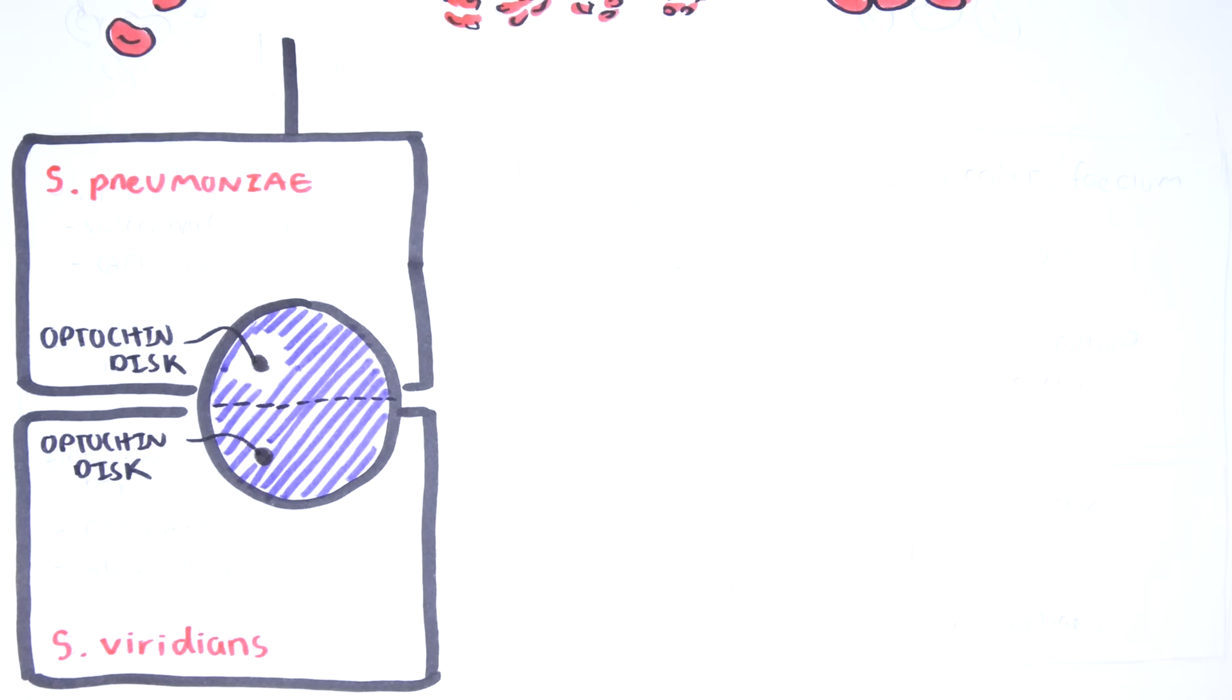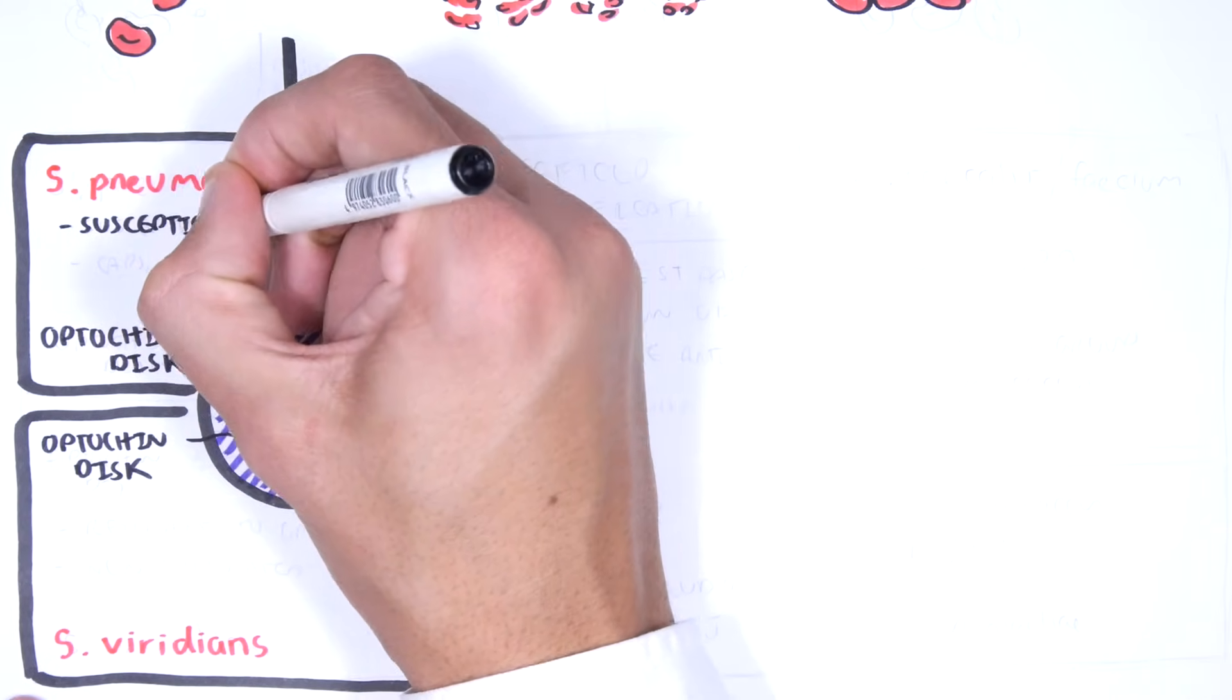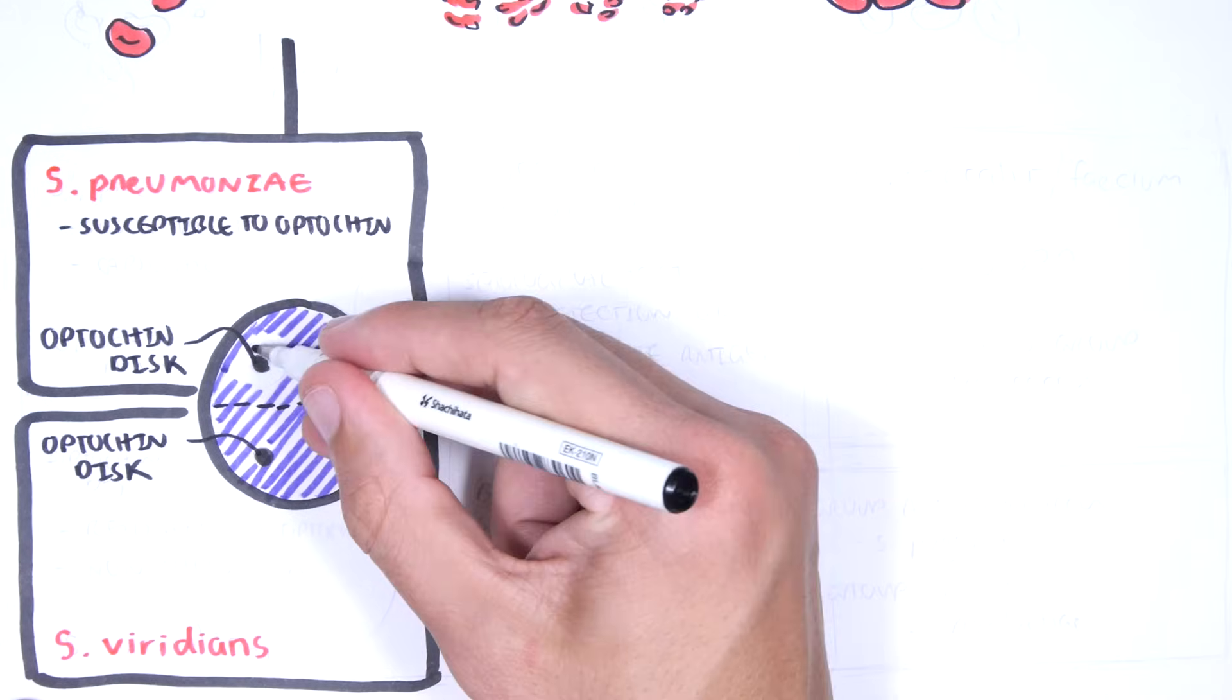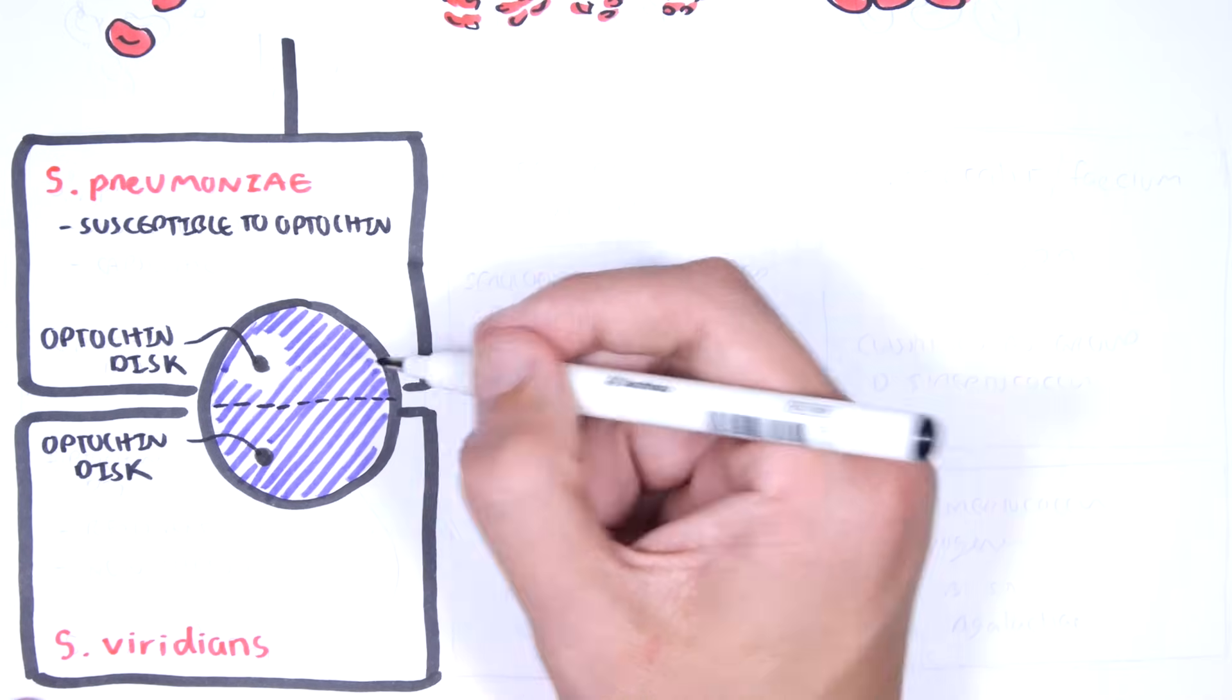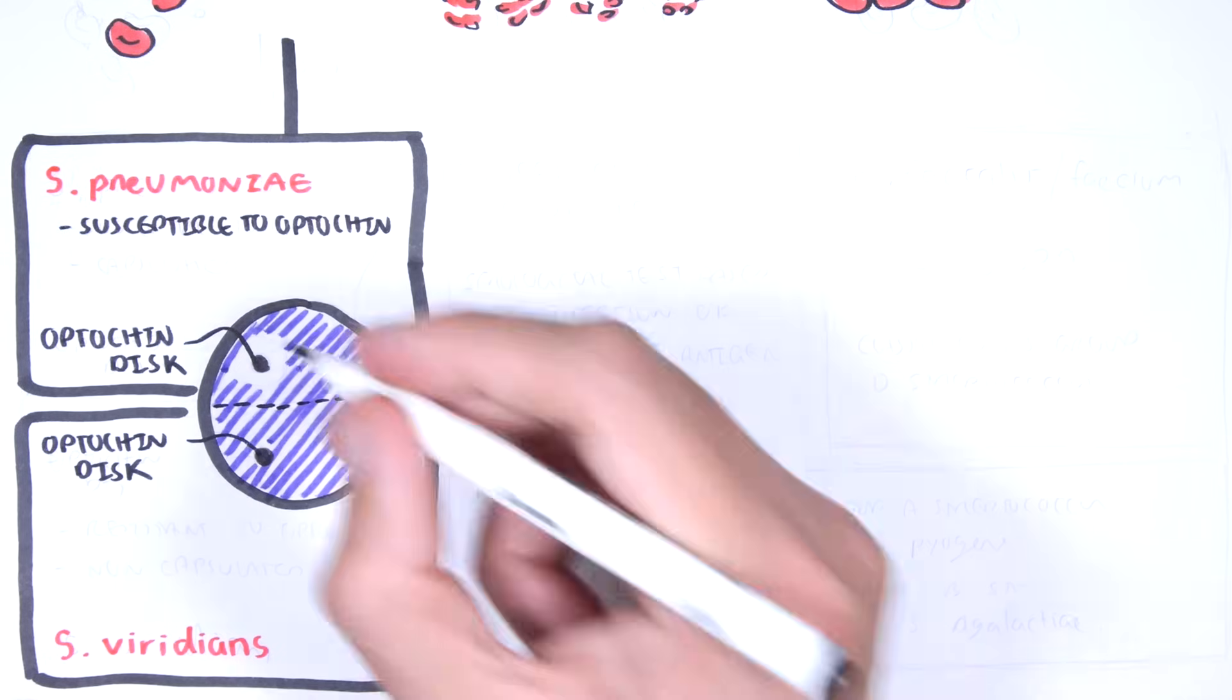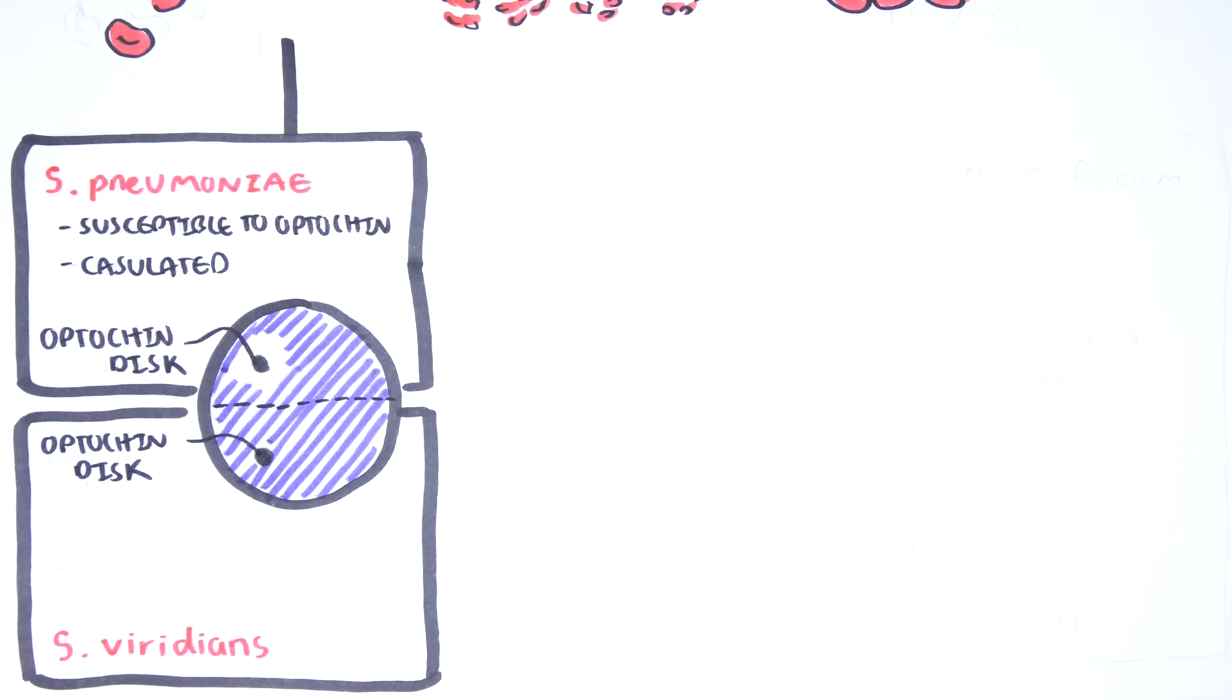Streptococcus pneumoniae, the bacteria which is well known to cause community-acquired pneumonia and acute hepatitis media, is susceptible to optochin. And so, around the optochin disc, there is a space, because all the streptococcus pneumoniae bacteria have died around it. But another feature of streptococcus pneumoniae is that they are a capsulated organism. They have a capsule.